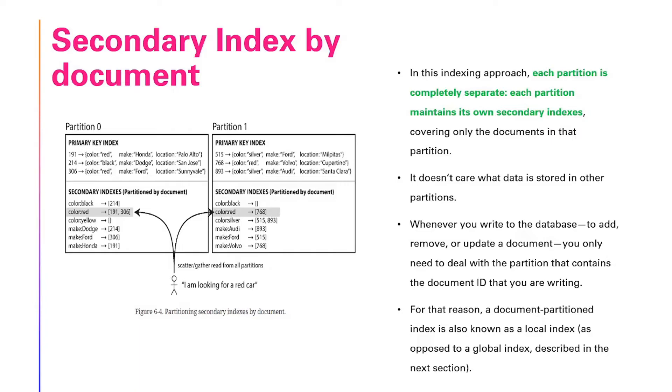Whenever you write to the database to add, remove, or update a document, you only need to deal with the partition that contains the document ID that you are writing. For that reason, a document partitioned index is known as a local index as opposed to a global index which is described in the next section.